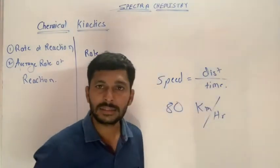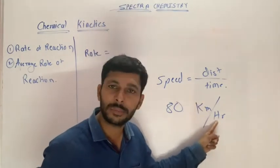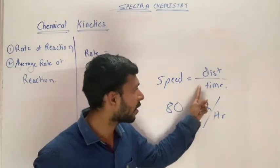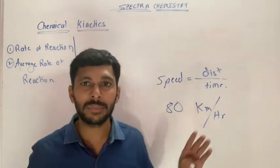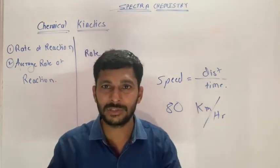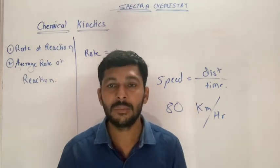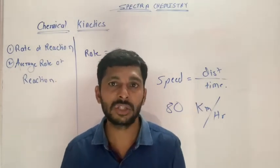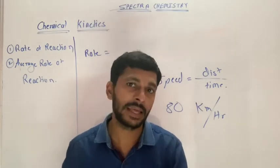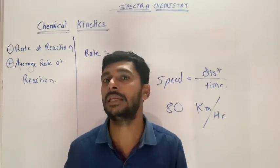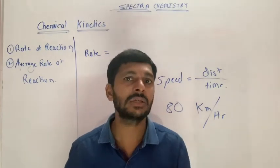How many units do we measure? We measure the distance and time — that is the normal formula. But when we measure the chemical reaction, we can use a container. If we measure chemical reactions, we can apply the same concept to chemical reactions.